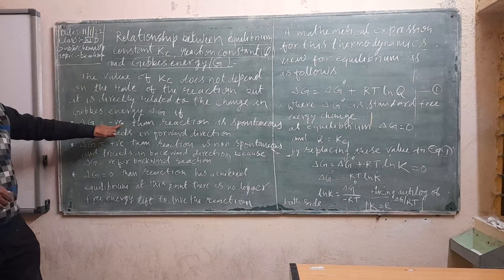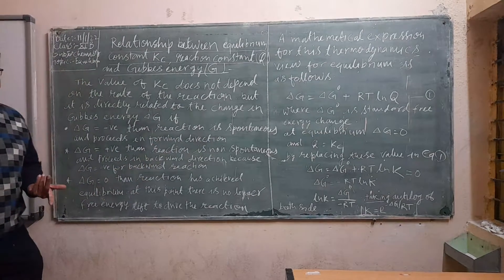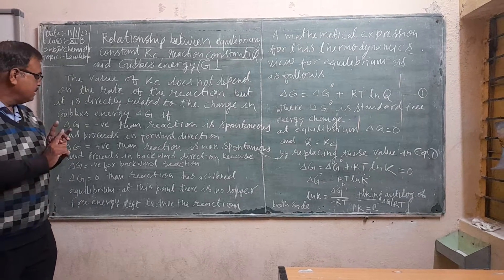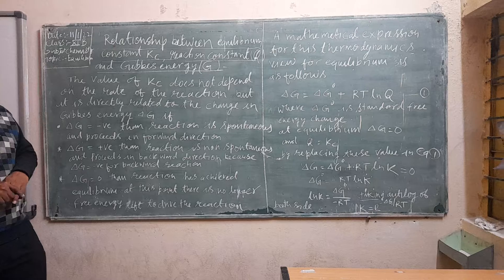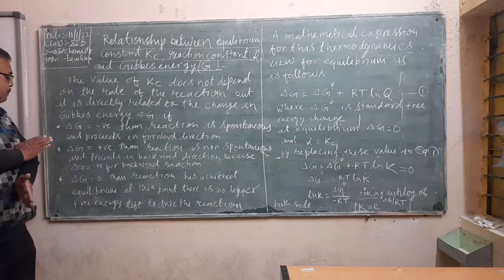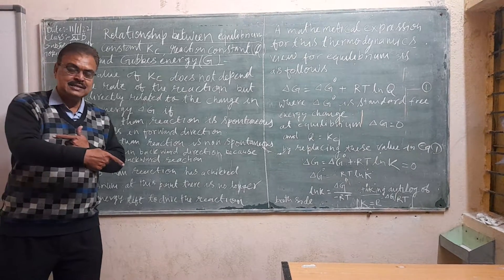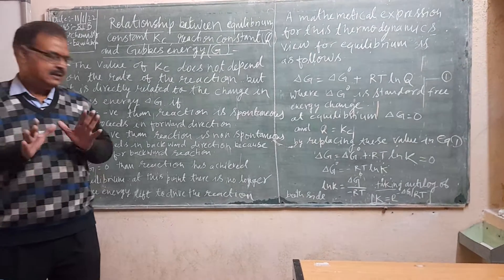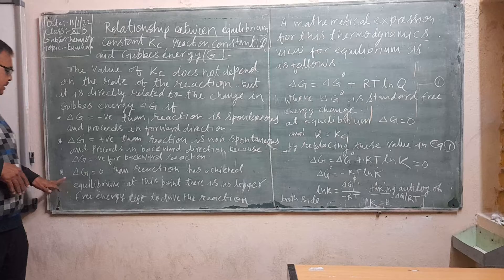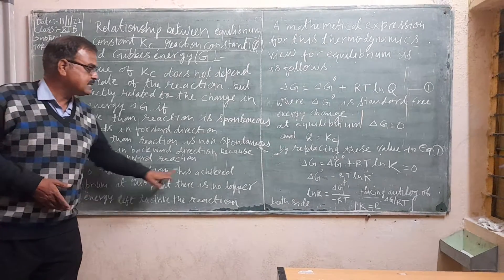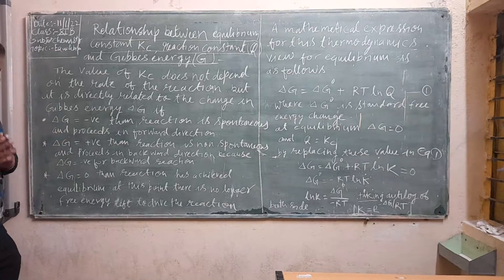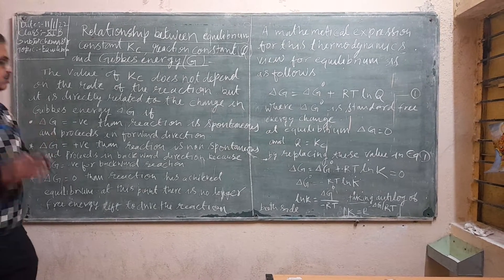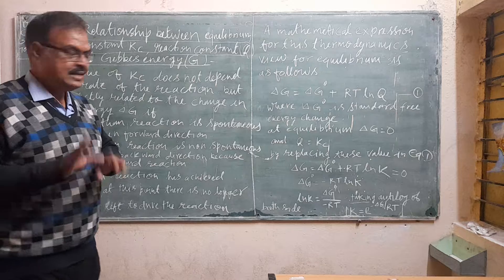If delta G is negative, then the reaction is spontaneous and will proceed in the forward direction. If delta G is positive, then the reaction is non-spontaneous, and oppositely delta G is negative for the backward reaction, so the products will convert into reactants and the backward reaction will proceed easily. If delta G is equal to zero, then the reaction has reached equilibrium. At this point, no free energy is available to drive the reaction, so delta G equals zero at the state of equilibrium.